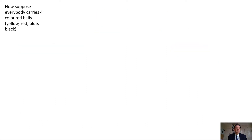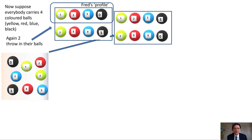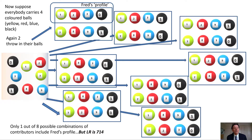You can extend this to four coloured balls and it gets even more ridiculous. Again, two people throw their balls into a box. It's possible that Fred's profile is in that mixture, but it's not in any of these other combinations. There's only one out of eight possible combinations which includes Fred's profile. In this case, the likelihood ratio for the hypothesis that Fred's profile plus one unknown are the contributors versus two unknowns is 714. But the posterior probability of his profile being in the mixture is only one out of eight.